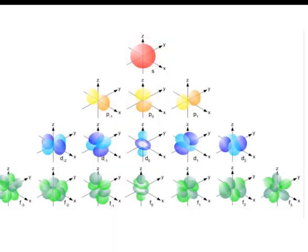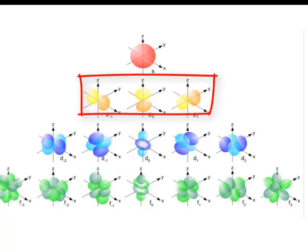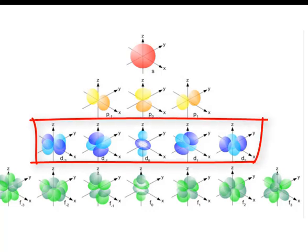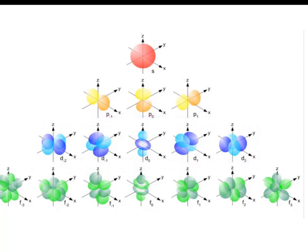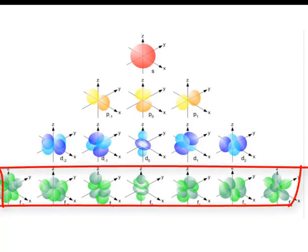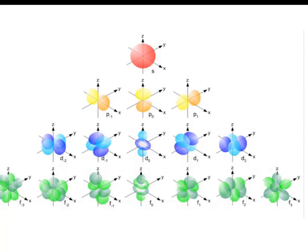Here we see the one orientation of the S, and the three ways to position the P shape on the X, Y, and Z axis. You can see that for the D, things get a little more complicated. And then, of course, for the F, it looks really complicated. Remember, at the center of the coordinate axis is the nucleus, and so these shapes of space are oriented around the nucleus.